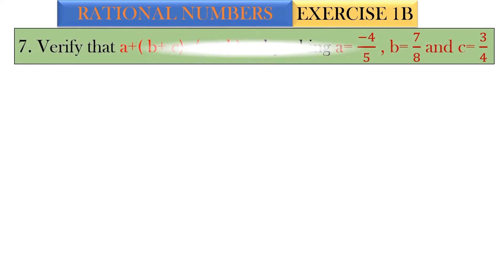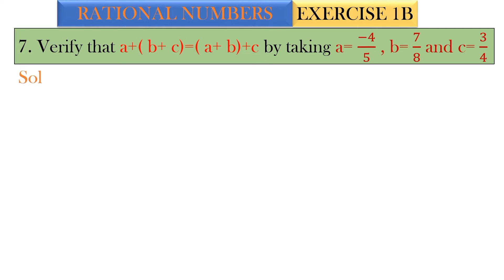Verify that (a + b) + c is equal to a + (b + c), by taking a = minus 4 by 5, b = 7 by 8, and c = 3 by 4.